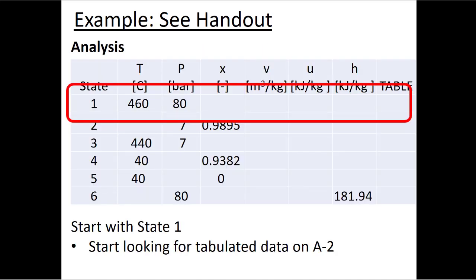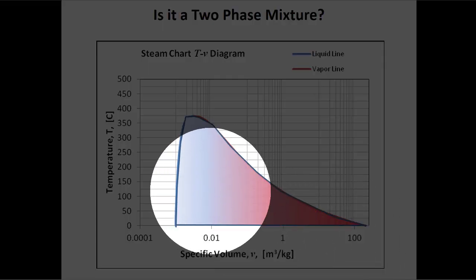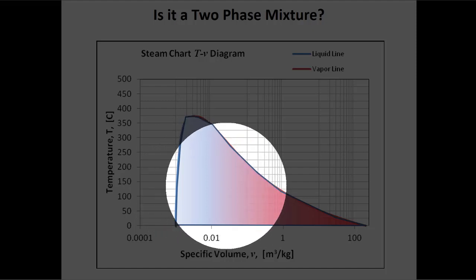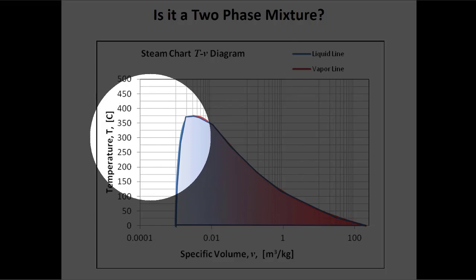For state one, we're told the temperature and the pressure. I don't immediately know where we'll be on the phase diagram — whether we're subcooled liquid, superheated vapor, or under the vapor dome. The first thing I always do is ask myself: is it a two-phase mixture? Because if it's not, I can figure out from the data whether we're superheated vapor or subcooled liquid.